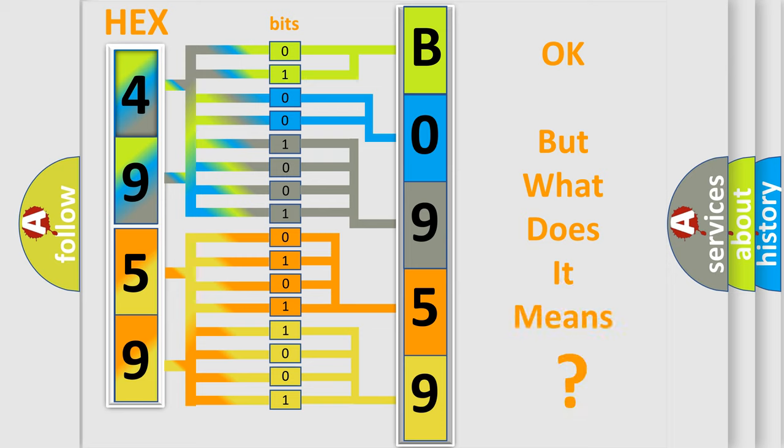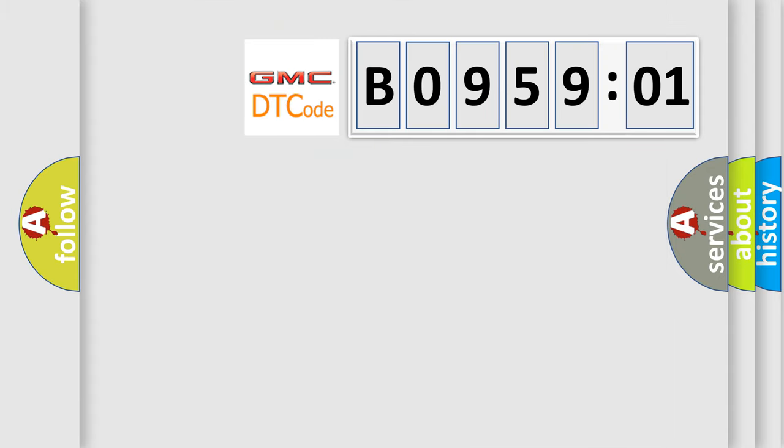We now know in what way the diagnostic tool translates the received information into a more comprehensible format. The number itself does not make sense to us if we cannot assign information about what it actually expresses. So, what does the diagnostic trouble code B095901 interpret specifically?